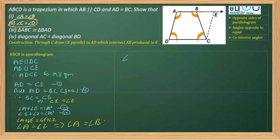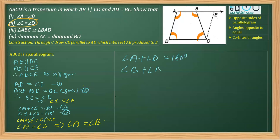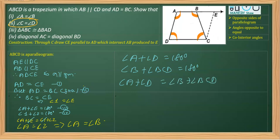Since AB is parallel to CD, the interior angles on the same side of the transversal are supplementary. So angle A plus angle D equals 180 degrees, and angle B plus angle C equals 180 degrees. Equating both expressions, angle A plus angle D equals angle B plus angle C. Since we have already proved angle A equals angle B, we can cancel them, and therefore angle D equals angle C. That proves the second part.